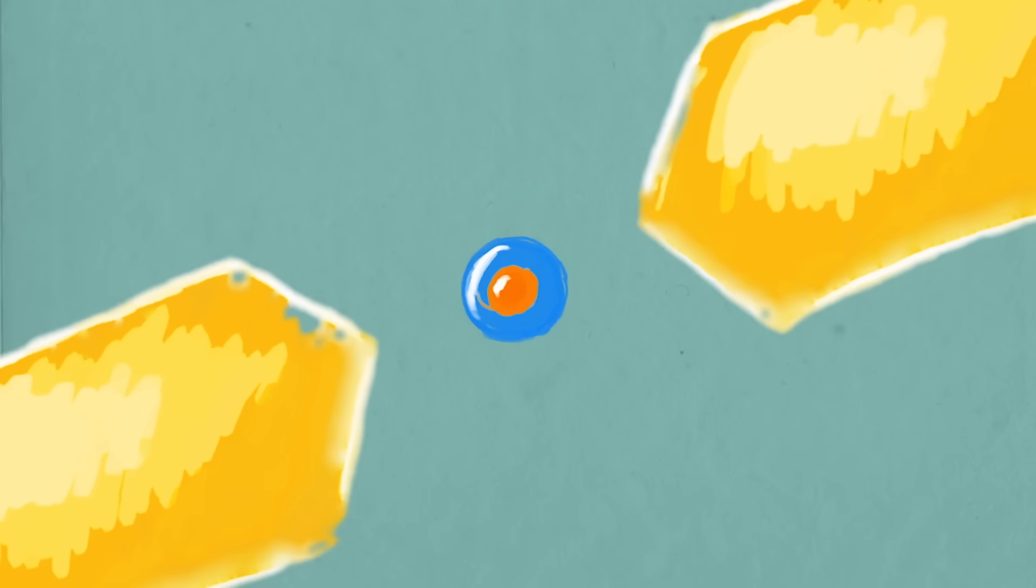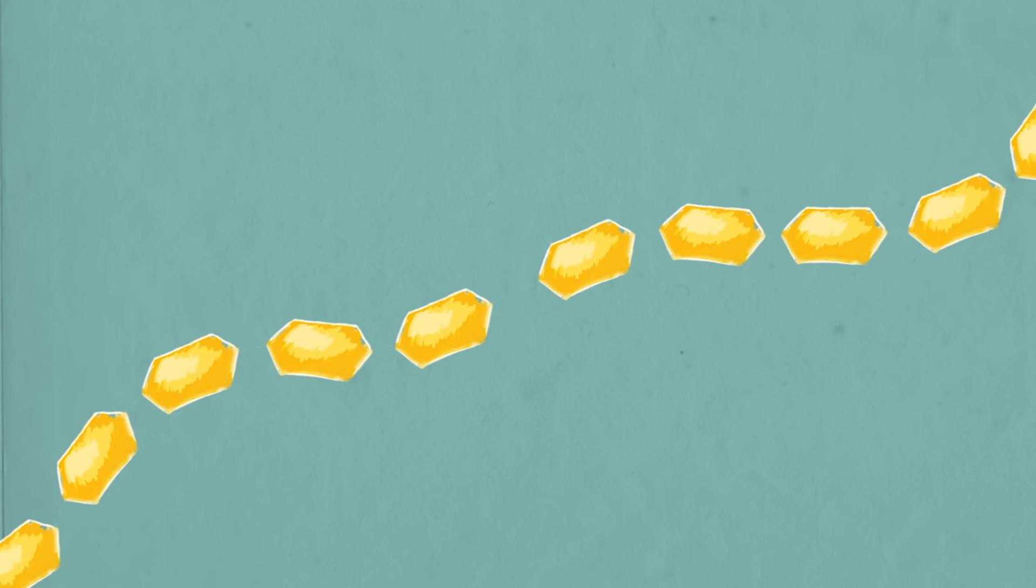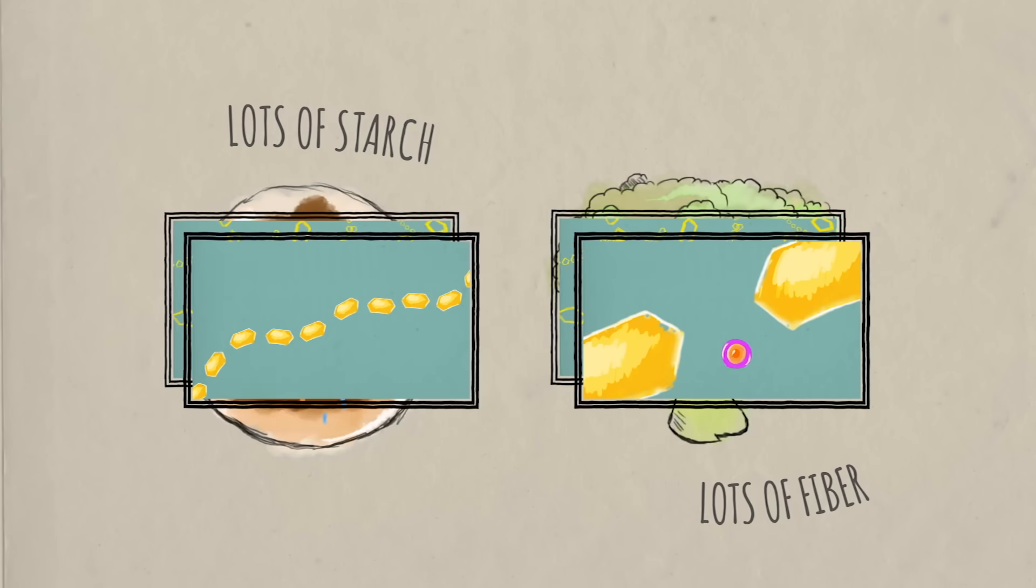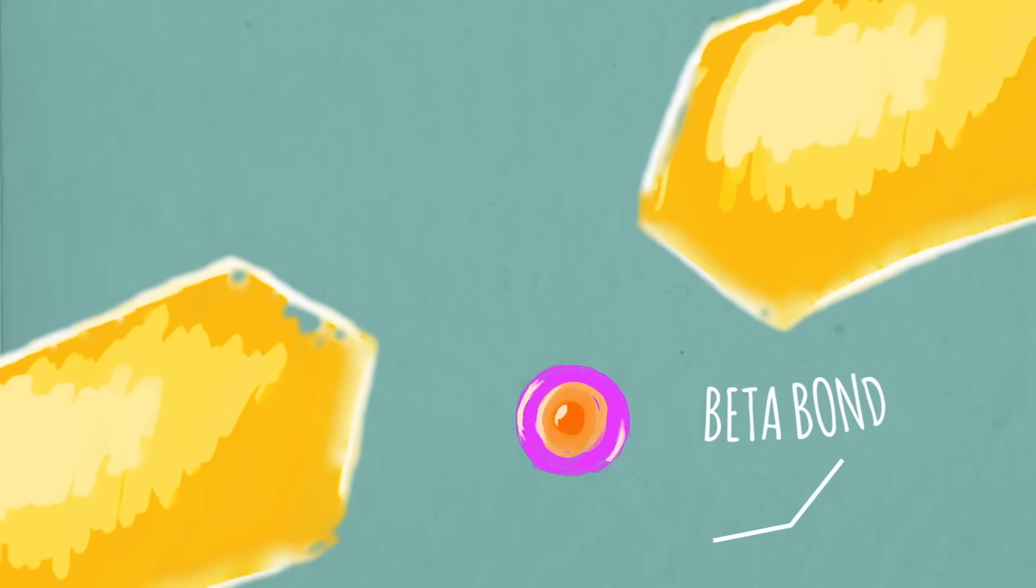In starches, which plants mostly store for energy in roots and seeds, glucose molecules are joined together by alpha linkages, most of which can be easily cleaved by enzymes in your digestive tract. But in fiber, the bonds between monosaccharide molecules are beta bonds, which your body can't break down.